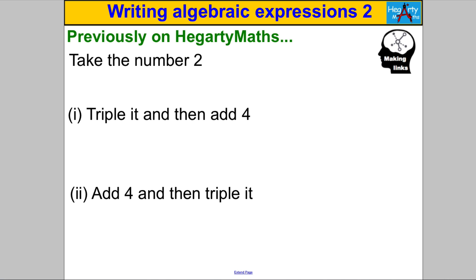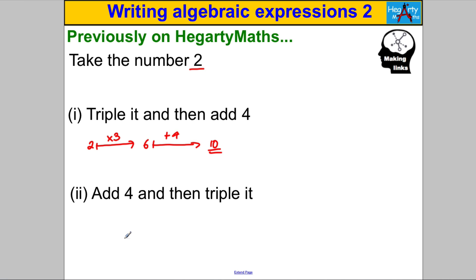Suppose I gave you the number 2 and I said triple it and then add 4. So you have the number 2, you would triple it — multiply it by 3 — and you'd get 6. Then you'd add 4 and you get the answer 10.